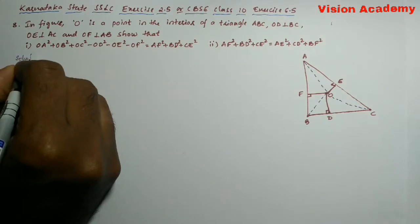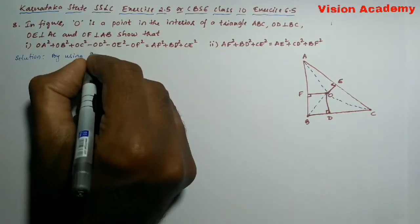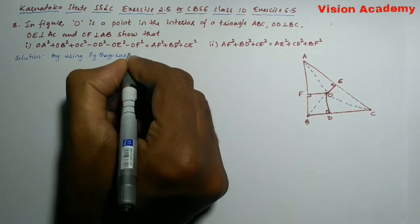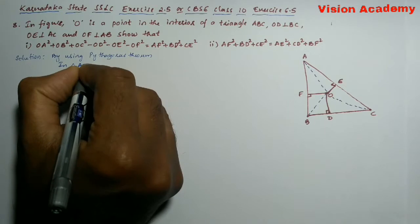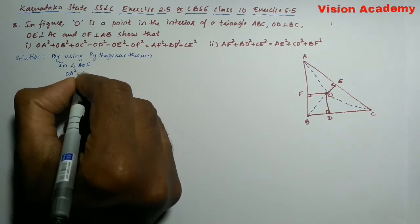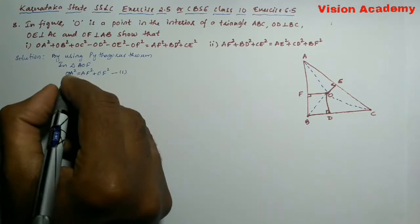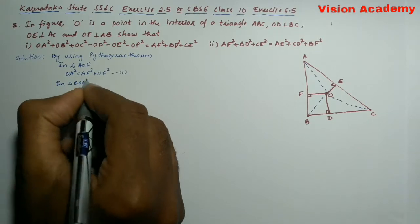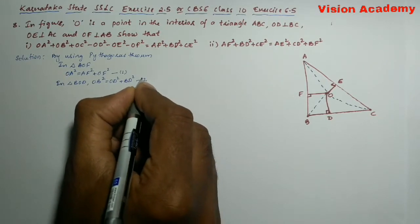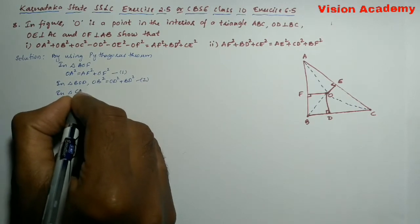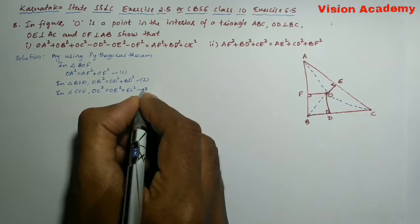Let us find the solution for the given problem. By using the Pythagoras theorem, we can write: In triangle AOF, OA² = AF² + OF² — let this be equation 1. In triangle BOD, OB² = OD² + BD² — equation 2. In triangle COE, OC² = OE² + EC² — equation 3.